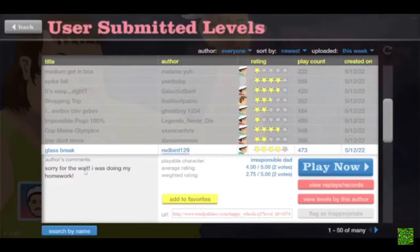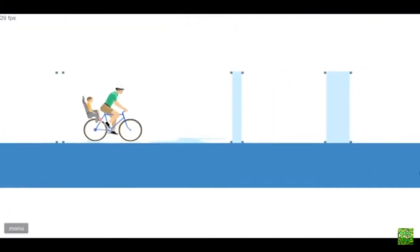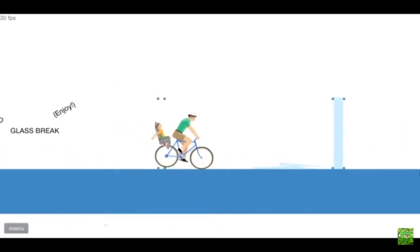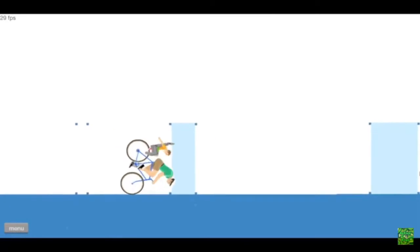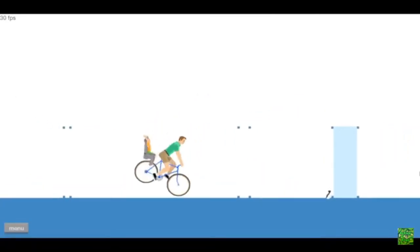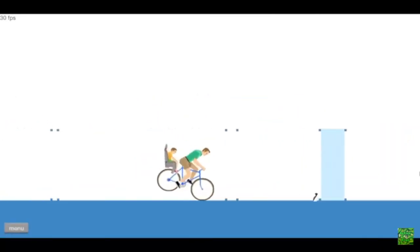Last Break Serve for the Way I Was Doing the Homework by Redbird129, and it has four stars out of five and 473 plays. And break through the first one, easy peasy. Second one, just smush all this glass down so you don't break your neck next time. Oh my, why? Oh my gosh, how are you supposed to do this?